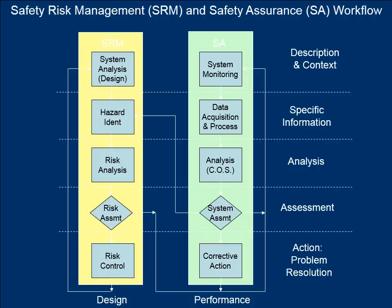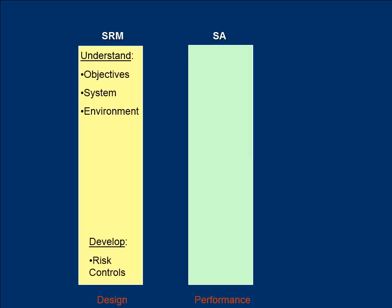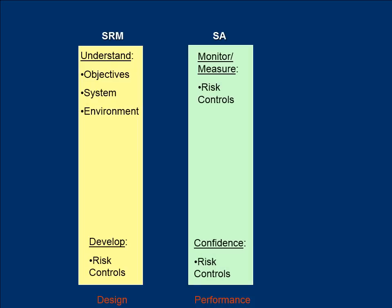It is important to remember that the safety risk management and safety assurance workflows apply to any robust SMS. As a recap, the SRM process is essentially a design process where you understand the objectives, system, and environment of the operation in enough detail to identify the hazards and develop risk controls. The safety assurance process is a performance assurance process that monitors and measures risk controls to assure confidence in the system's ability to maintain risk controls and ensure continuing operational safety. Together, SRM and SA are tools to be used in decision making to manage risk — a safety management system.